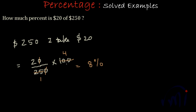So how we have done? First we have written them in terms of fractions, and to convert a fraction into percent we multiply it by 100. So if we multiply 20 by 250 by 100 we are getting 8. So $20 is 8% of $250, so this is the result.